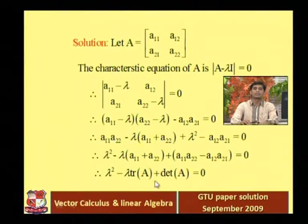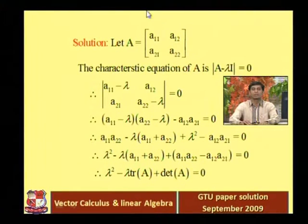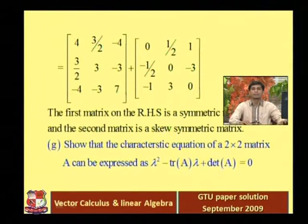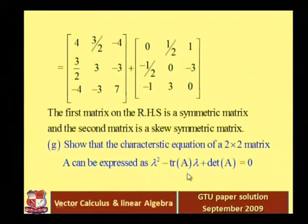So we can write this as lambda squared minus trace of A times lambda plus determinant of A equals 0. This equation is satisfied for any 2×2 matrix — we used general elements a11, a12, a21, a22, not any particular matrix. So this equation satisfies for any 2×2 matrix, completing the solution.